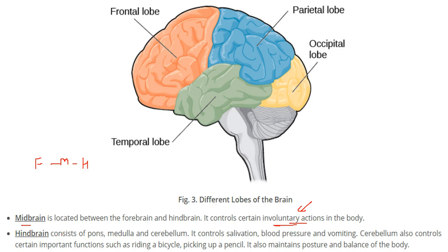The hindbrain consists of the pons, medulla, and cerebellum. It controls salivation, blood pressure, and vomiting — for example, people often vomit when travelling on a winding mountain road. The cerebellum also controls important activities such as riding a bicycle or picking up a pencil, and it maintains posture and balance. People who are drunk cannot stand or balance properly because this part of the brain is affected.